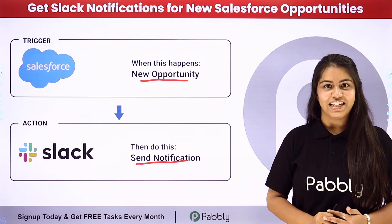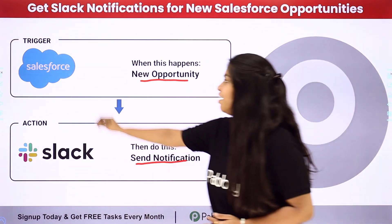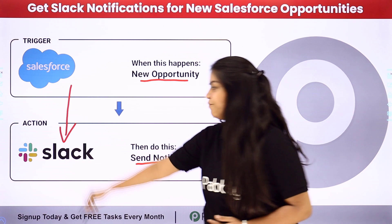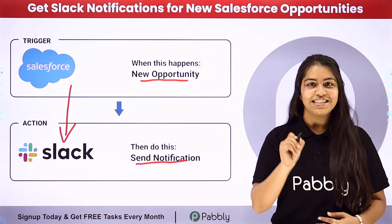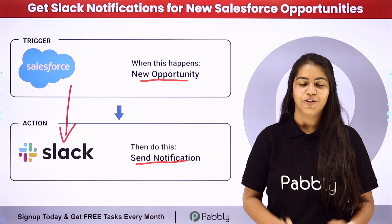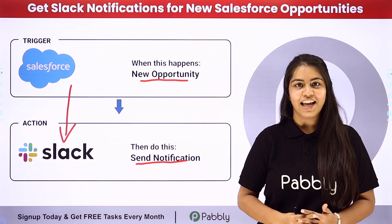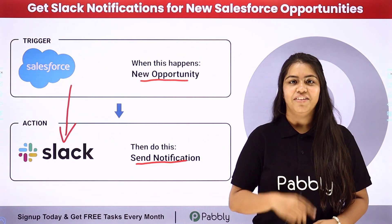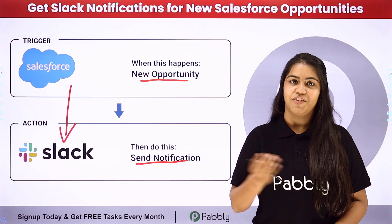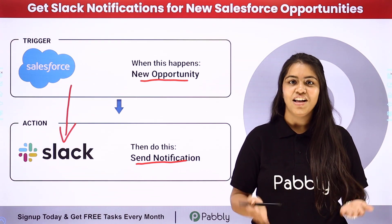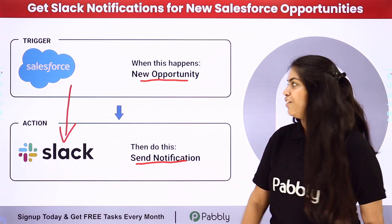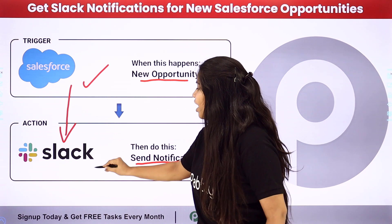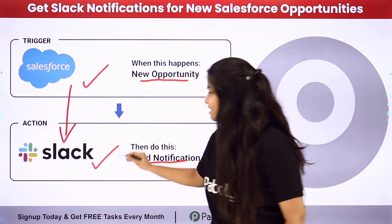For this, you have to create an integration between Salesforce and Slack. To create this integration, we are going to use Pabbly Connect — it is an amazing automation software. In Pabbly, we have the concept of Trigger and Action. For the Trigger, we are going to use Salesforce, and for the Action, we are using Slack.